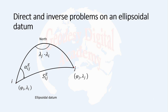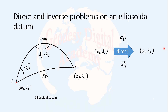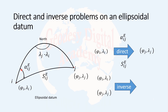Direct and inverse problems on an ellipsoidal datum are very similar to those in circular and planar datums. In the direct problem, we have a known point i with coordinates phi i and lambda i, and we measure some quantities like the geodesic line and geodesic azimuth from point i to point j to determine the coordinates of point j. In the inverse problem, we have the coordinates of both points and we want to determine the geodesic distance and the geodesic azimuth between them.